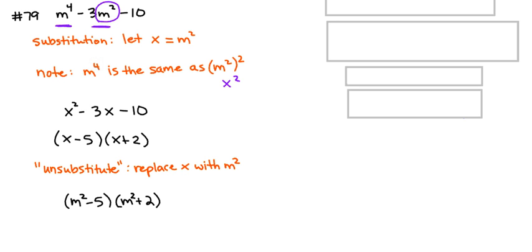Now, before you think you're done, you should always check these expressions and see if either of those factors further. So can we factor m squared minus five? No, that's not a difference of squares because five is not a perfect square. If it was m squared minus four, we could factor further. This is done, though. m squared plus two, does that factor further? No, it does not. So we have our answer.